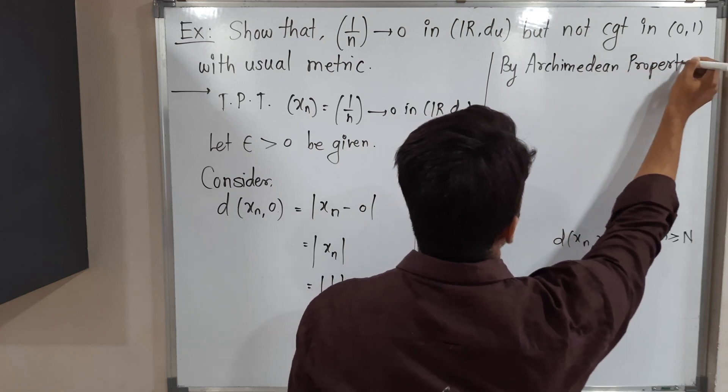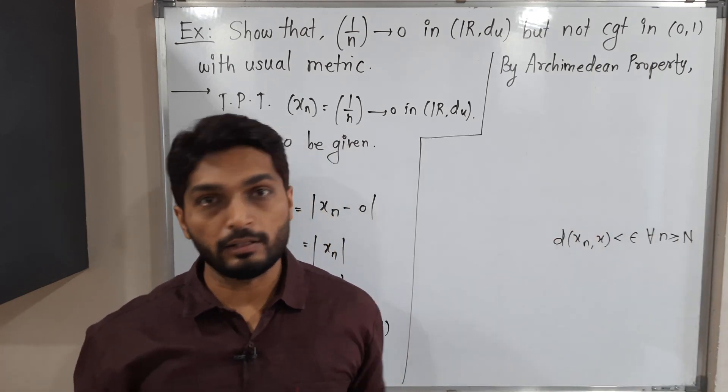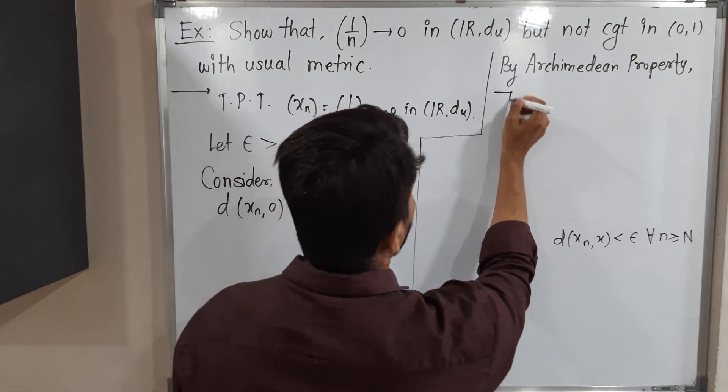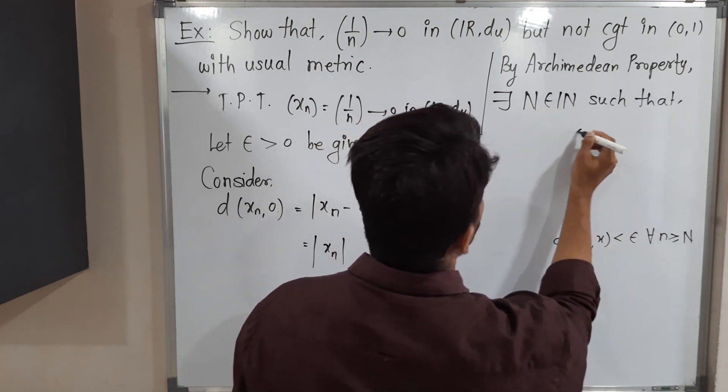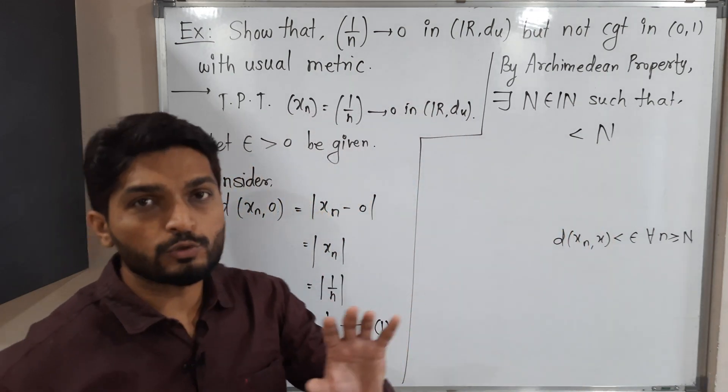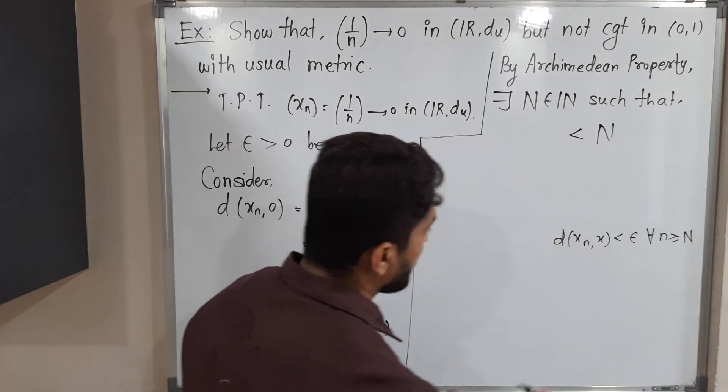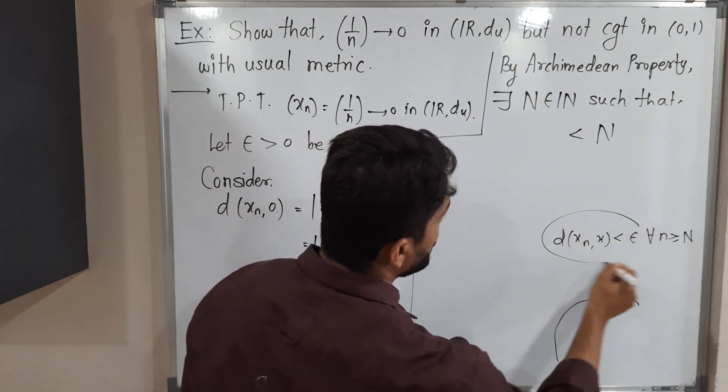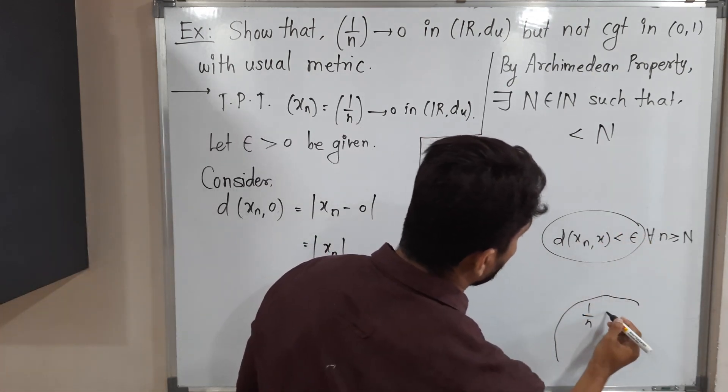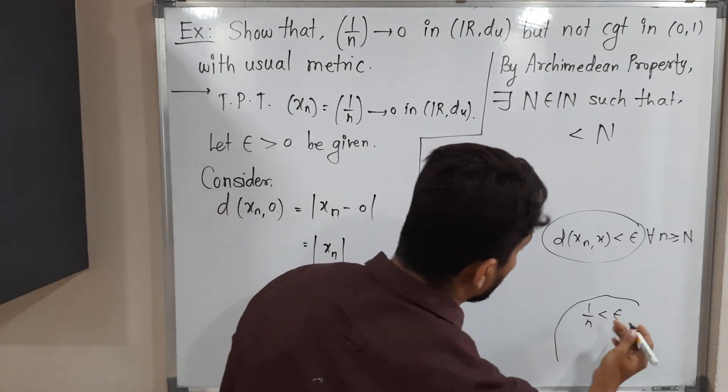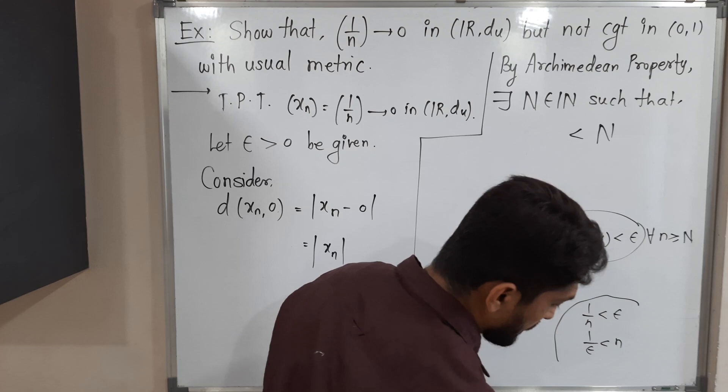If you have any real number, definitely we can find a natural number greater than that real number. So we can write there exists a natural number N such that it is greater than the given real number. So now we have to select a suitable real number for which we will have N greater than that. I need to do some rough calculation. I will do the calculation here. We have to prove this part. Its value we have already calculated which is 1 by n.